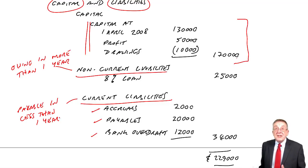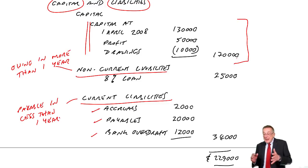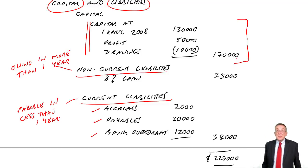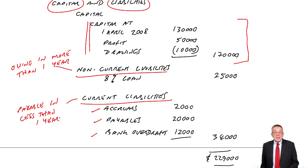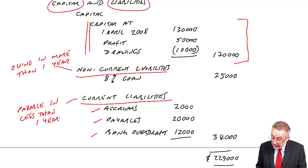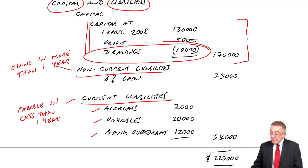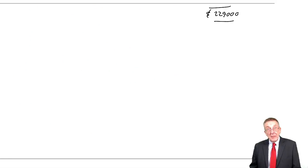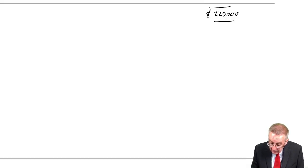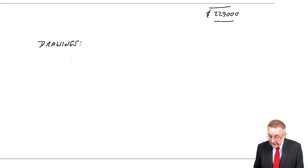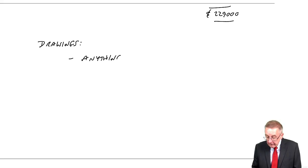This is very much an overview — this is what we're aiming for — but at the end of each year we need to produce this statement. Now, before I pause this lecture and look at the other statement — the statement of profit or loss — I did say I wanted to say a bit more about drawings. The full definition of drawings or withdrawals is: it's anything the owner takes from the business.